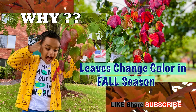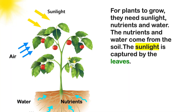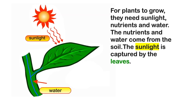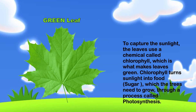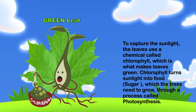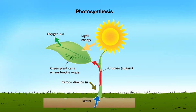Why, Mommy? Interesting question. Let's learn the science behind it. For plants to grow, they need sunlight, nutrients, and water. The nutrients and water come from the soil. The sunlight is captured by the leaves. To capture the sunlight, the leaves use a chemical called chlorophyll, which is what makes leaves green. Chlorophyll turns sunlight into food — sugar — which the trees need to grow, through a process called photosynthesis.